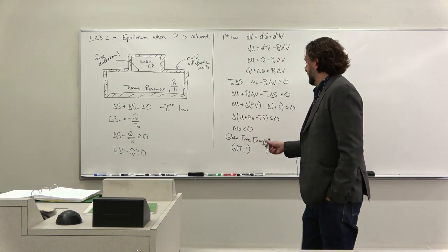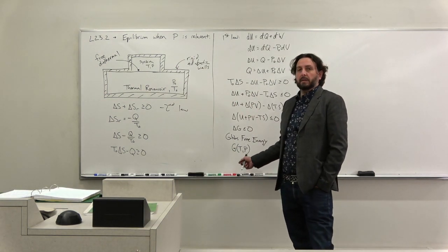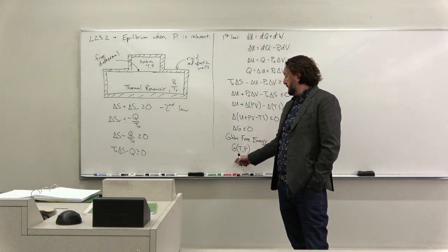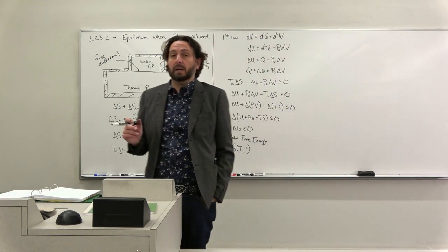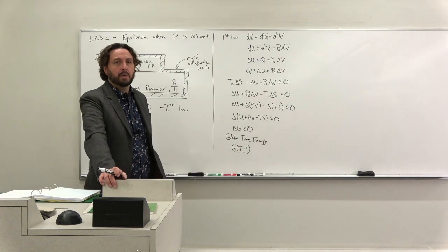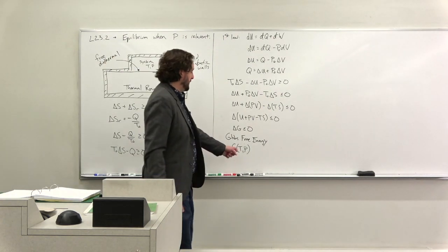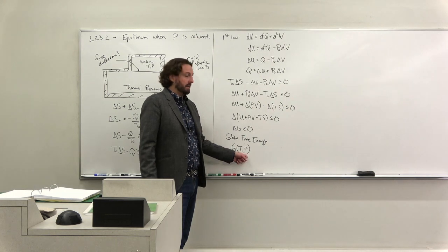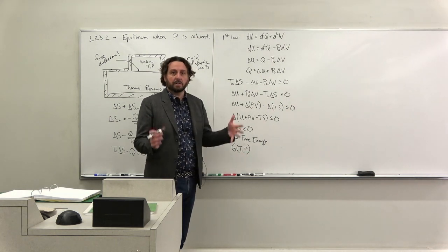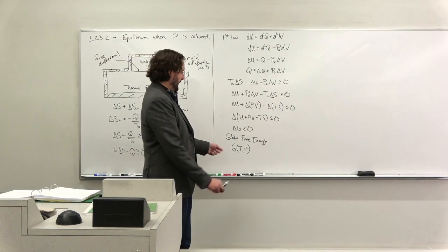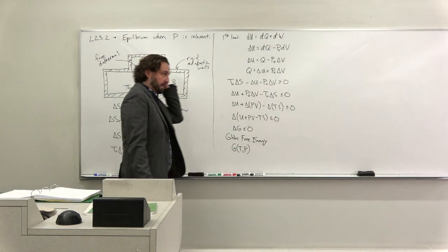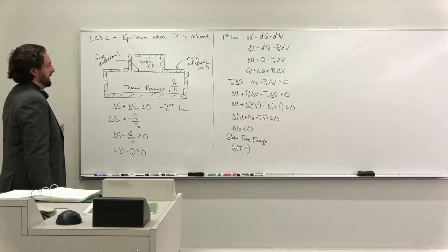So this is really key. So many, many situations, temperature and pressure are relevant variables. Like boiling a pot of water. If you boil a pot of water at home, you're going to worry about the temperature, but also the pressure is what's fixed in the room, not the volume. The volume is just allowed to change randomly.